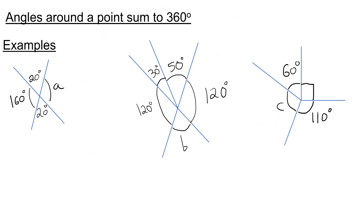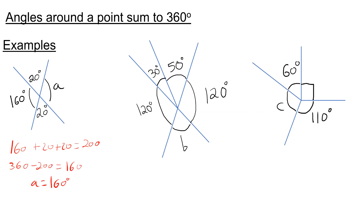Angles around a point add up to 360 degrees. If we look at this first question and want to find A, we add up the angles we know: 160 plus 20 plus 20 plus 20, which is 200. We subtract 200 from 360 to get 160. So A is 160 degrees.